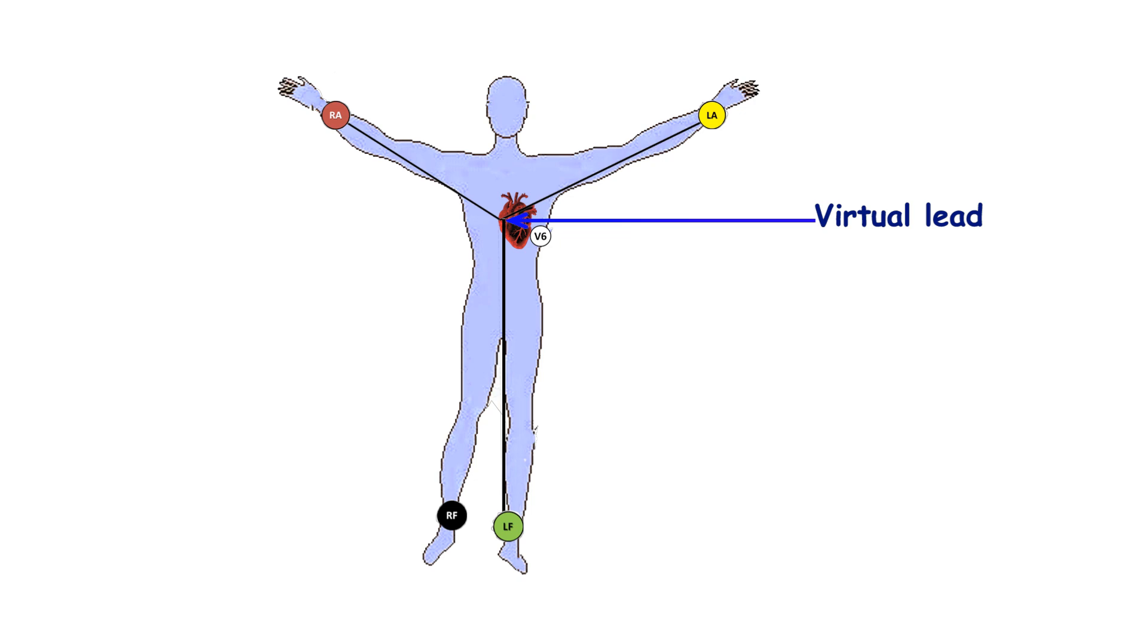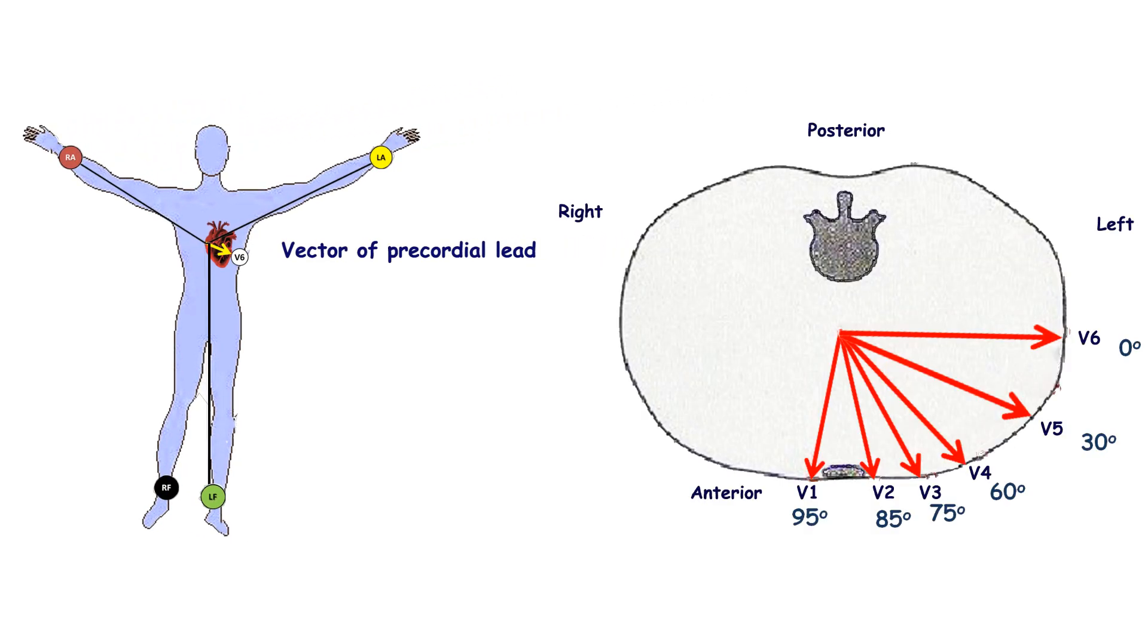In the precordial leads, precordial electrodes attached to the anterior chest wall are used as the positive poles, while Wilson's central terminal acts as the negative pole. Wilson's central terminal is the average of the limb potentials. Precordial leads describe the electrical currents of the heart in the horizontal plane.